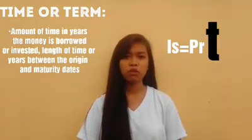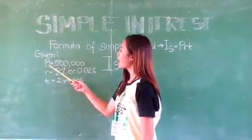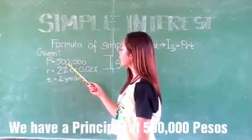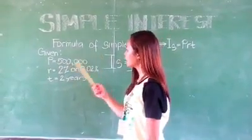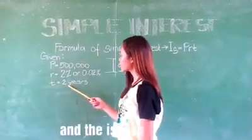Length of time in years between the origin and maturity dates. And this is the given. We have a principal of 500,000 pesos. And the rate is 2% or 0.02. And the time is 2 years.